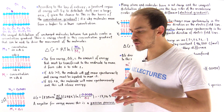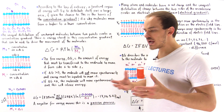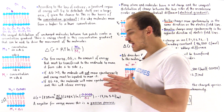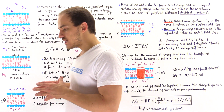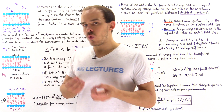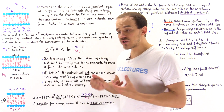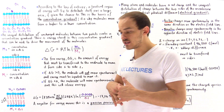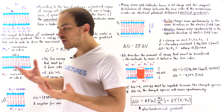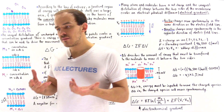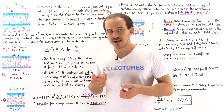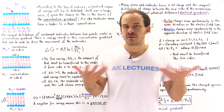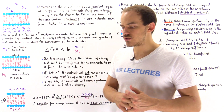In order to understand membrane transport, we actually have to understand the concept of the electrochemical gradient. What exactly is the electrochemical gradient and how can we quantify it mathematically? The electrochemical gradient is a concept that combines two different ideas: the concentration gradient and the electrical gradient.